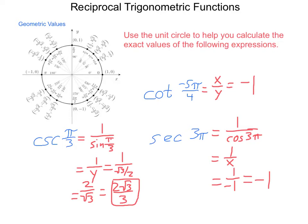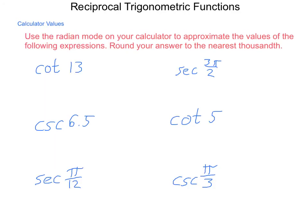But it's also helpful to be able to do this on a calculator. So we're going to use the radian mode on our calculator to approximate the values of the following expressions. We're going to round our answers all to the nearest thousandth.